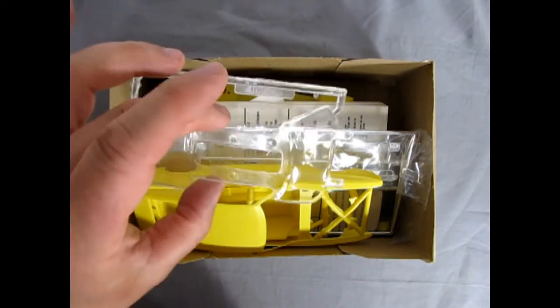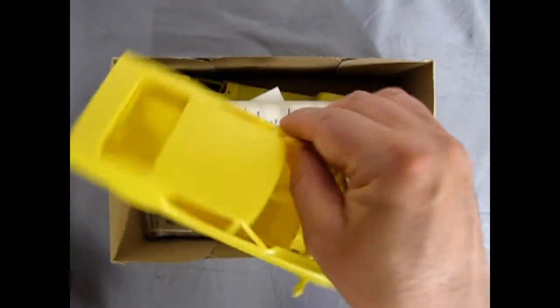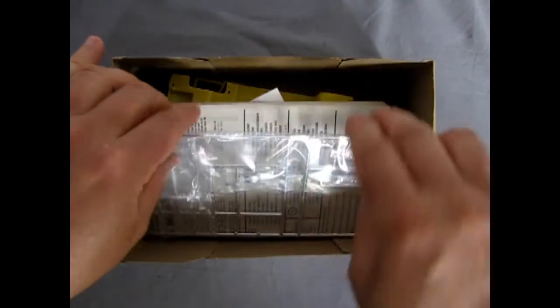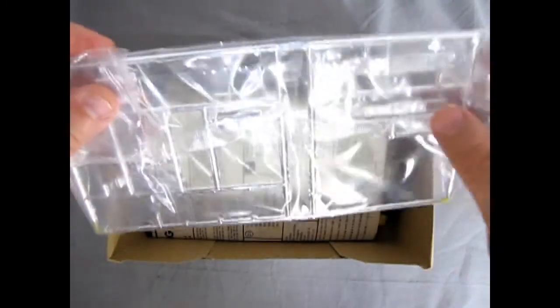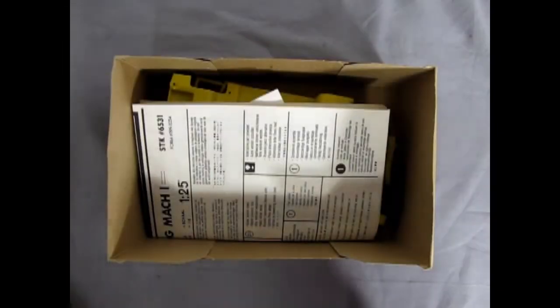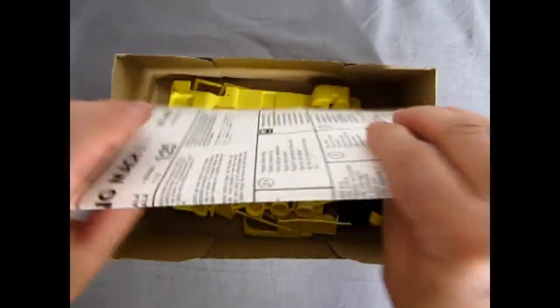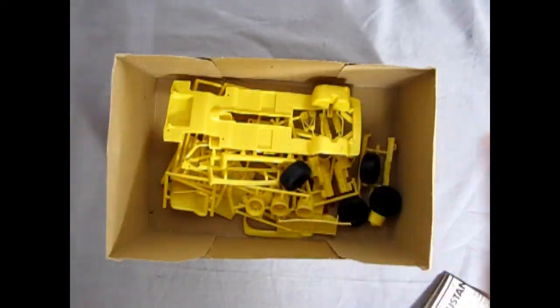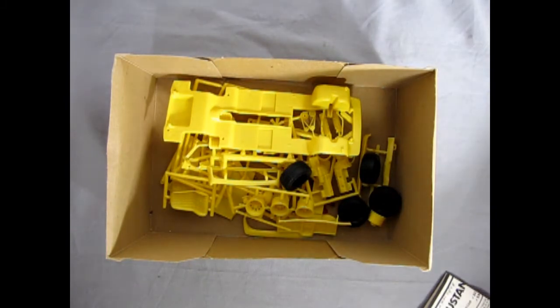Right away we see the glass in here followed by the body with the interior inside. Now this kit is out of my own personal collection and I got it secondhand from another collector. So there are still some things in bags like this chrome. And here we have our instruction sheet. And then the rest is just sort of in the box there. So let's take a look at these parts closer up.